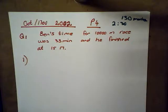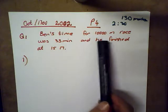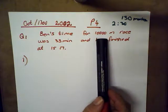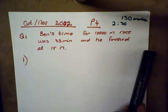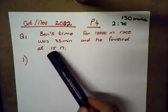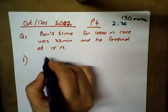Let's jump in and start with question one. At an athletics meeting Ben's time for the 10,000 meter race was 33 minutes exactly. He finished at 15:17. The first question is at what time did the race start? So we're going to start with the finish.